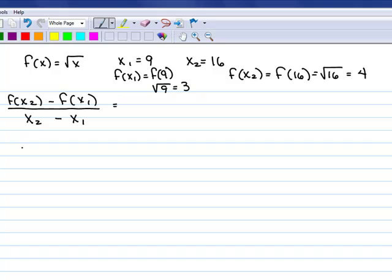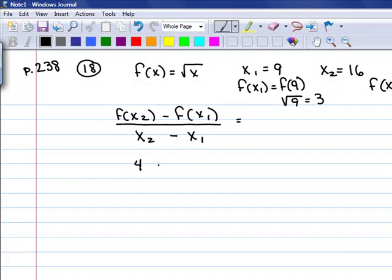So now you have all the pieces to this puzzle. f of x sub 2 is 4, minus f of x sub 1 is 3, divided by x sub 2 minus x sub 1. So this one turns out to be 1 over 7.